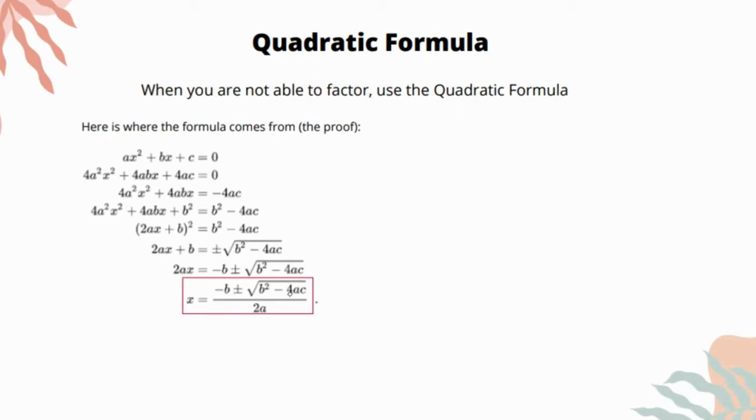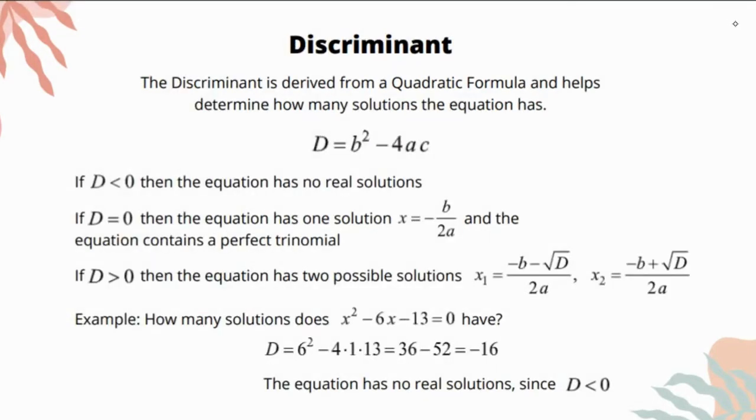And right here you can see the proof of the quadratic formula. It just explains where the formula comes from. The quadratic formula has a portion under the square root, and under the square root we have this expression b² - 4ac.